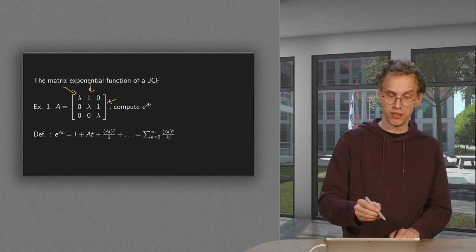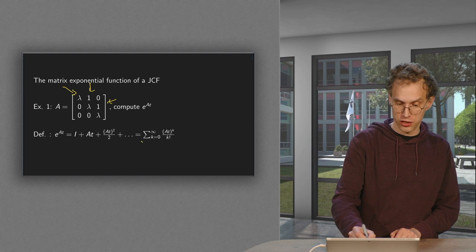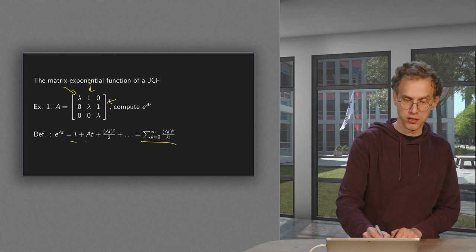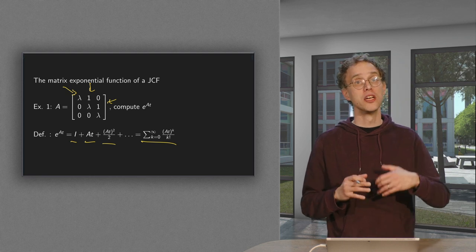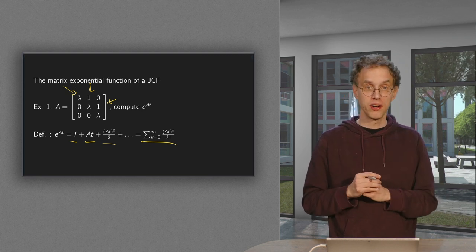So by definition, what you need is the sum over here, so identity plus At plus At squared over 2, and so on and so forth. So you need powers of your matrix A.